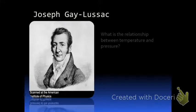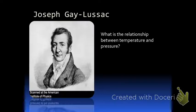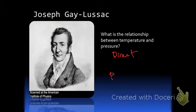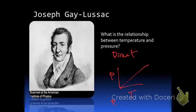Gay-Lussac's Law describes the relationship between temperature and pressure. As temperature increases, you would expect pressure to increase, because those molecules are moving faster causing more pressure — so this is a direct relationship. If we graphed pressure versus temperature it would show that as temperature increases, pressure increases as well. The equation is P1 over T1 equals P2 over T2.